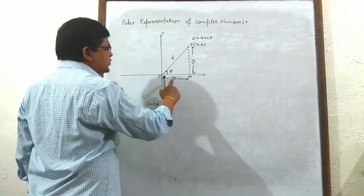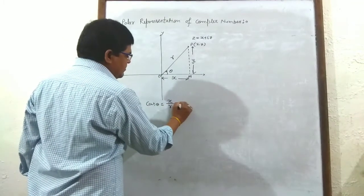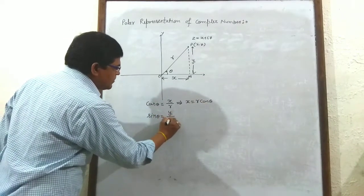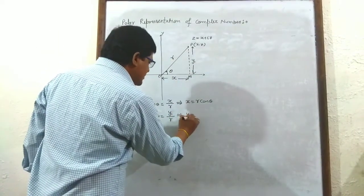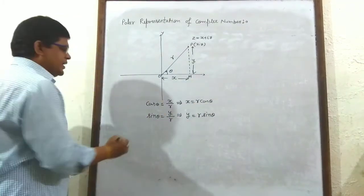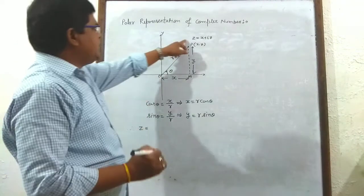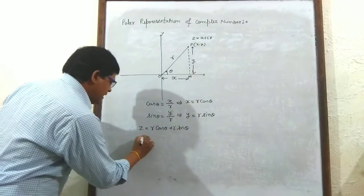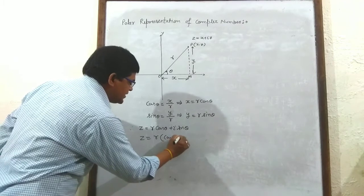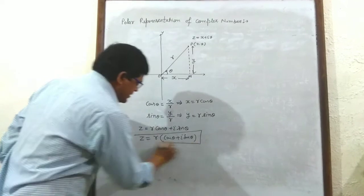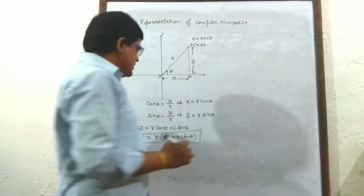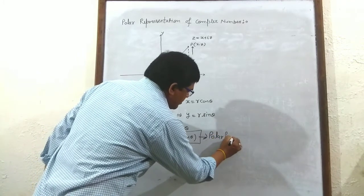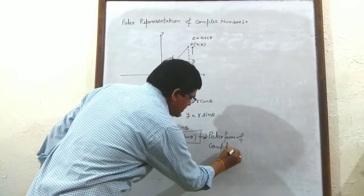Therefore, cos θ = base/hypotenuse = x/r, which implies x = r cos θ. And sin θ = perpendicular/hypotenuse = y/r, which implies y = r sin θ. Therefore, z = x + iy. Substituting the values: z = r cos θ + i r sin θ, or z = r(cos θ + i sin θ). This form of a complex number is said to be the polar form of a complex number.